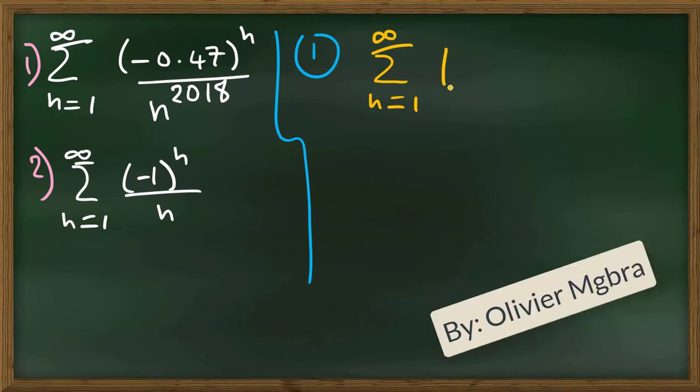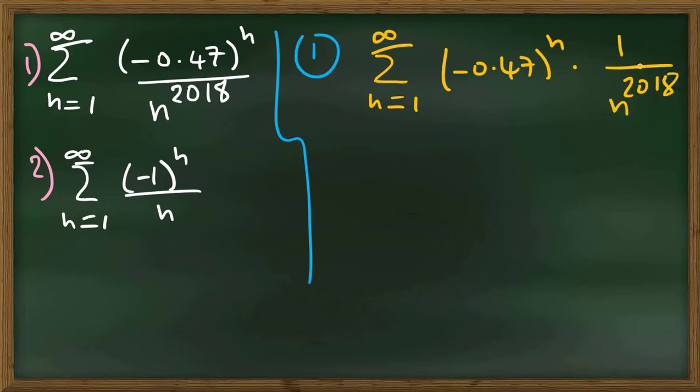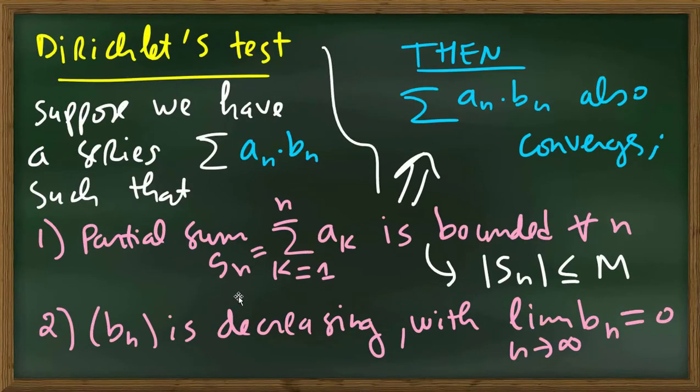Okay? So minus 0.47^n is a_n, and 1 over n^2018 is b_n. Let's form the partial sum S_n equals sigma from k equals 1 to n of A_k.